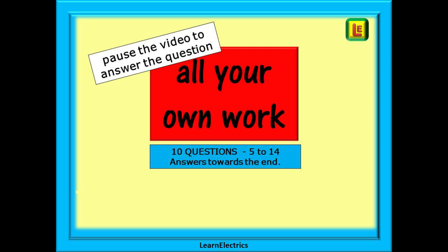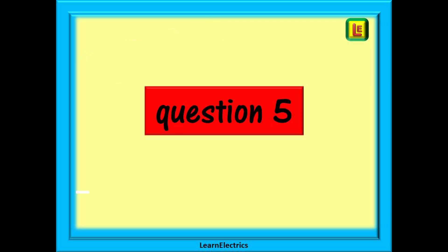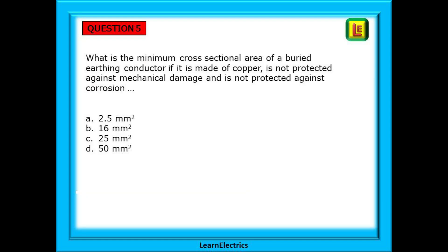Question 5 asks: what is the minimum cross-sectional area of a buried earthing conductor if it is made of copper, is not protected against mechanical damage, and is not protected against corrosion? Pause the video, look for the table with the keywords, find the answer, and write down your selection. Answers at the end.